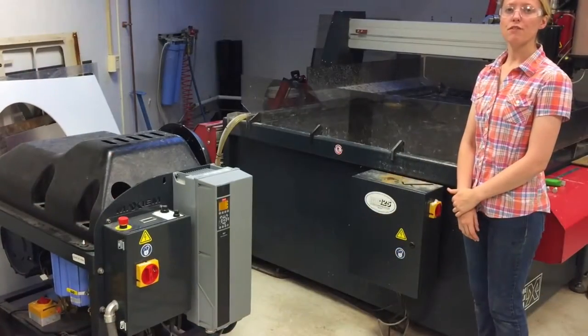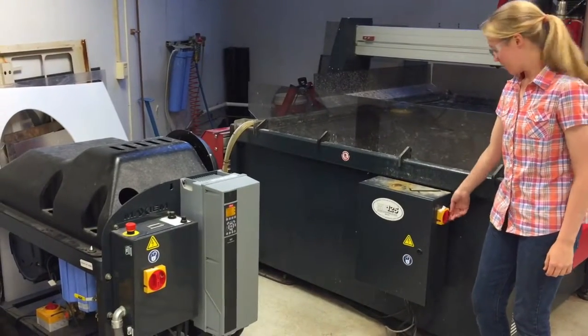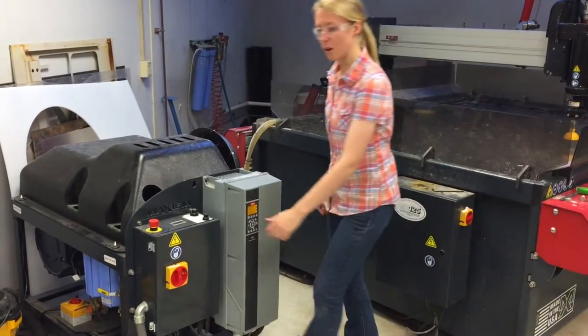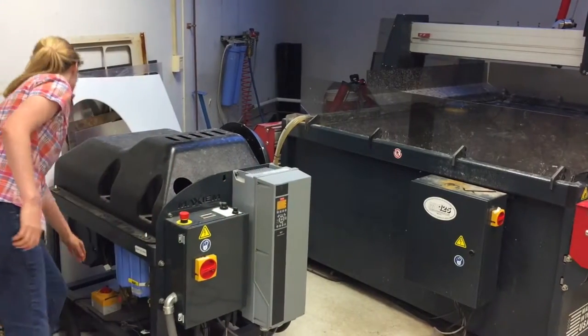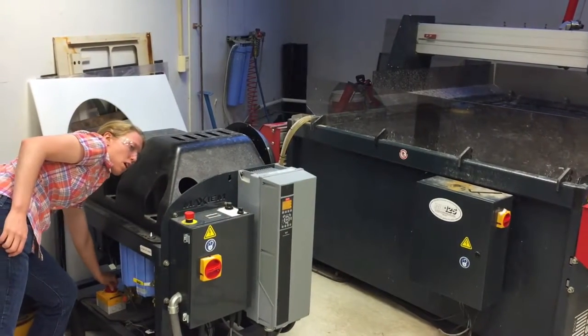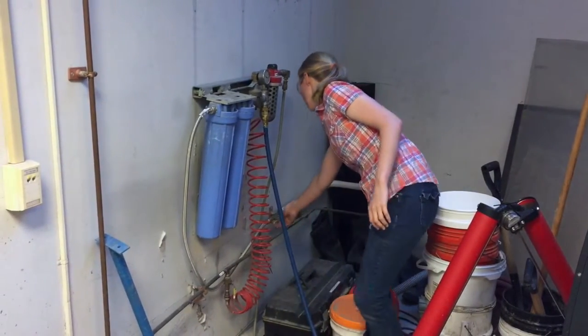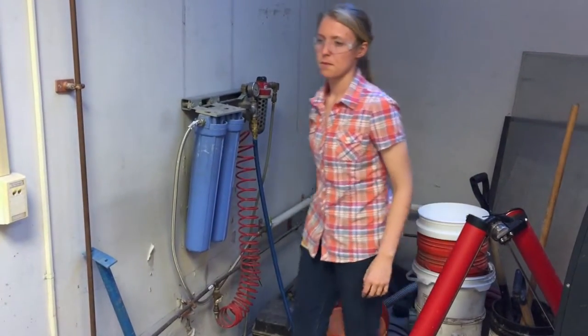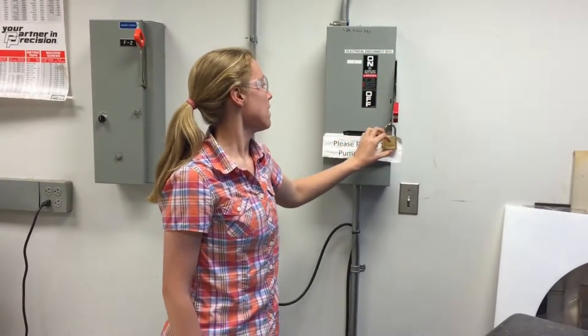You can completely finish using the water jet. Do the opposite of what you did to start it. So turn off this switch, turn off this switch, go back here, and turn the motor to off. Next, turn off the water and the air. And finally, turn the breaker off and lock it back.